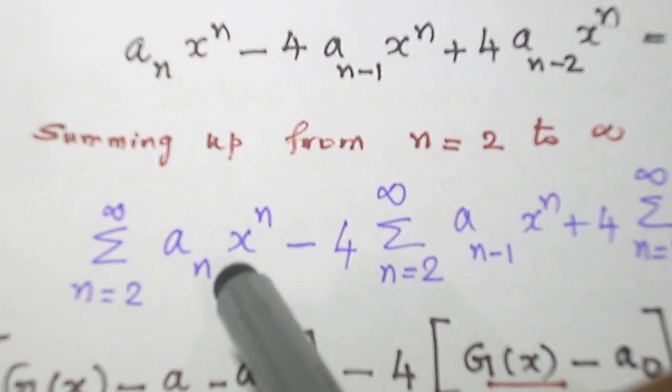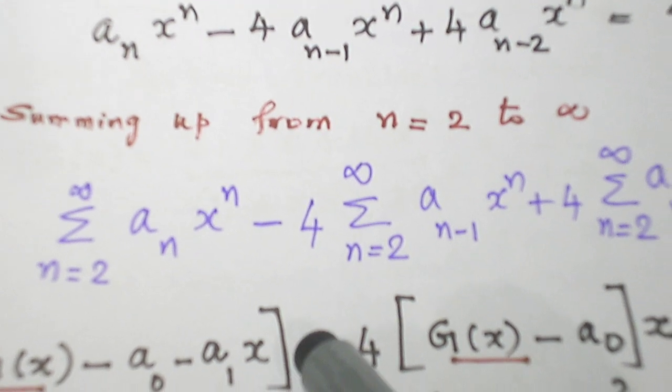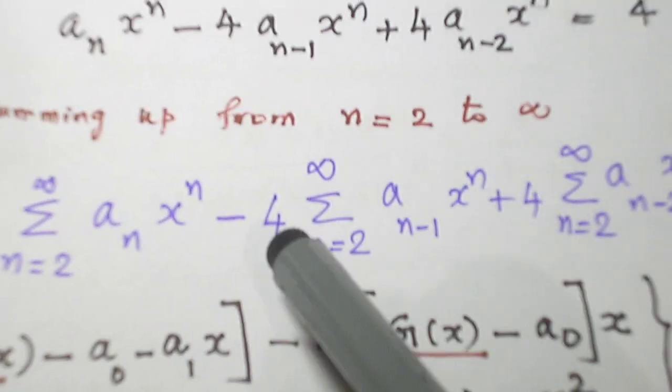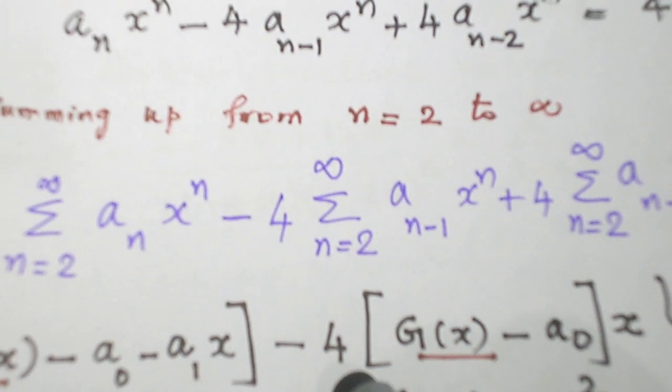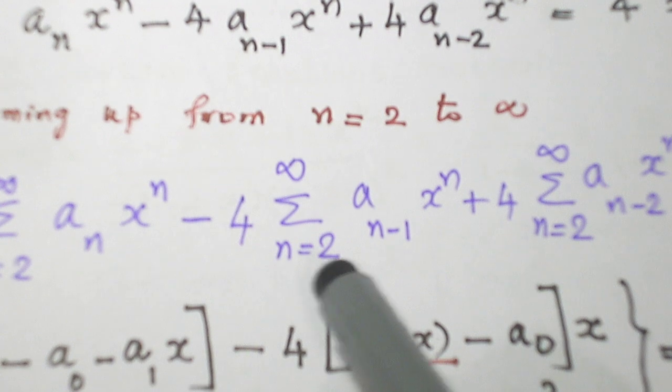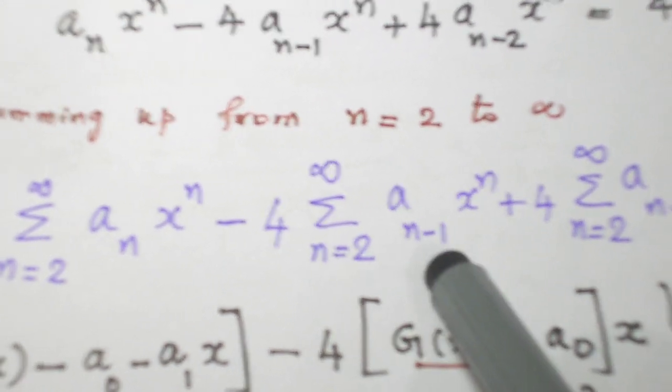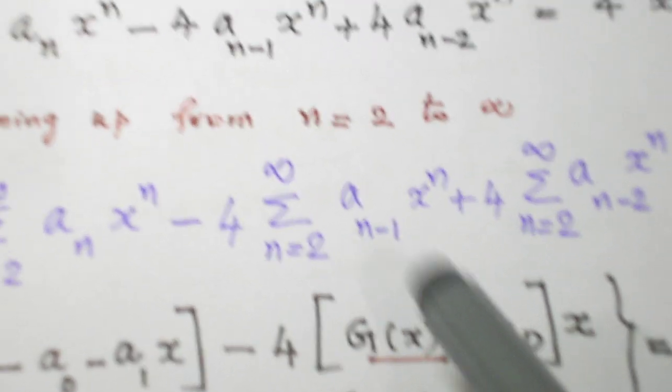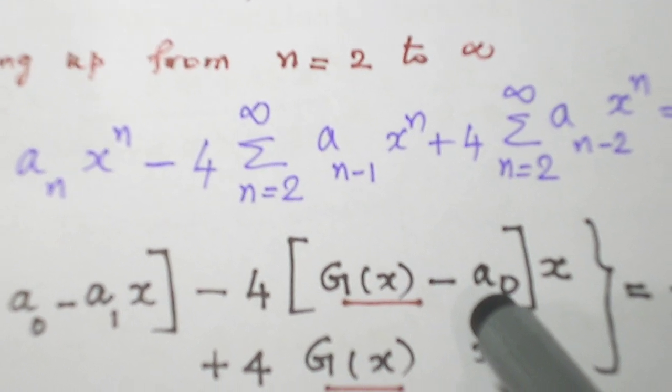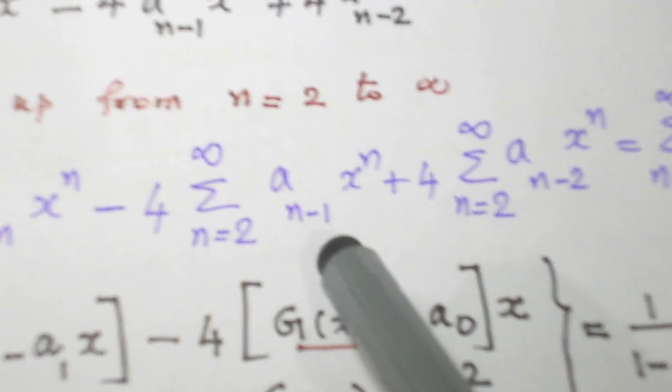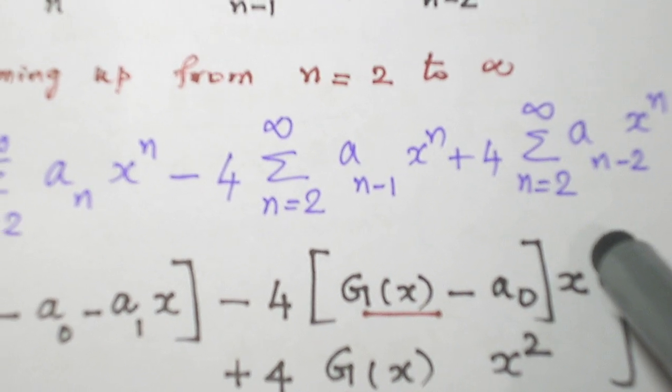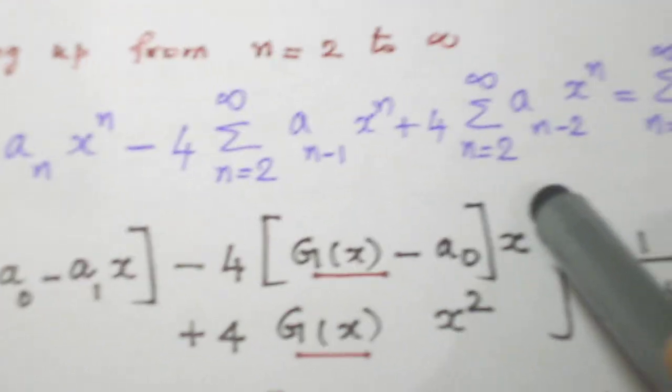And n minus 0 is there. So raise it, 0 raise it to the power of x. And 4 is coming as usual. Look at these two things. n = 2 and here n minus 1. What is the difference between 1 and 2 is 1? So just subtract one term. G(x) - a_0. And this 1 will go to the power of x. So I write x^1 is being multiplied outside.